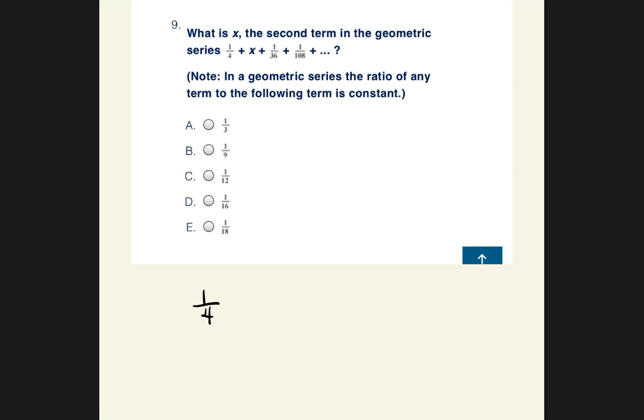Let's keep going. And this is going to be the last problem that we go ahead and review today. So let's write these out: 1/4 + x + 1/36 + 1/108. It says what is x, the second term in the geometric series 1/4 + x + 1/36 + 1/108? Note: in a geometric series, the ratio of any term to the following term is constant.